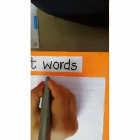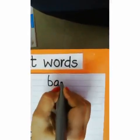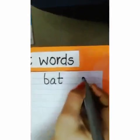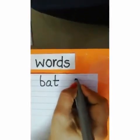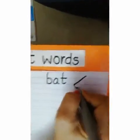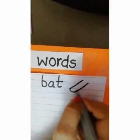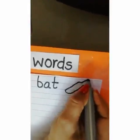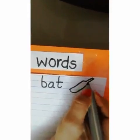Now once again we will write the same words. B, A, T — bat. Learn to draw the picture simultaneously for the same word. Bat.